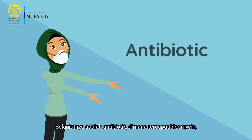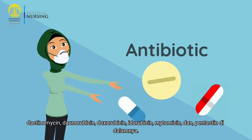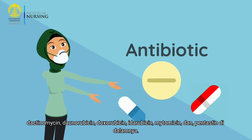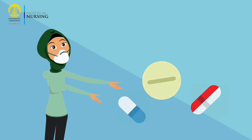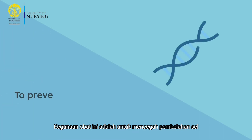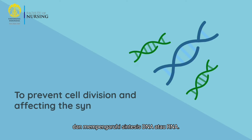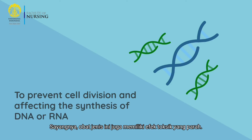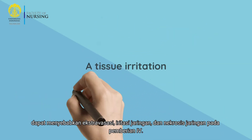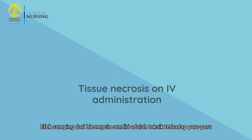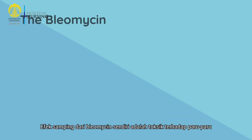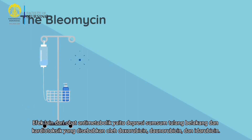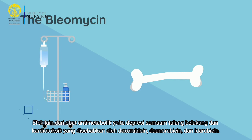Now we have antibiotics, including bleomycin, dactinomycin, daunorubicin, doxorubicin, idarubicin, mitomycin, and pentostatin. These drugs prevent cell division and affect the synthesis of DNA or RNA. This type has severe toxic effects: all antibiotic drugs mentioned, except bleomycin, can cause extravasation, tissue irritation, and tissue necrosis on IV administration. The side effect specific to bleomycin is lung toxicity. Other effects include bone marrow depression and cardiotoxicity caused by doxorubicin, daunorubicin, and idarubicin.